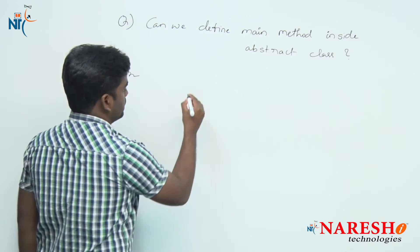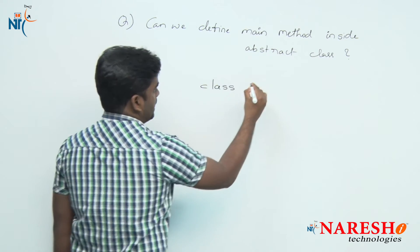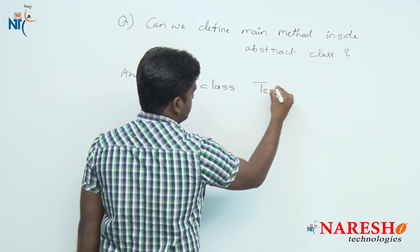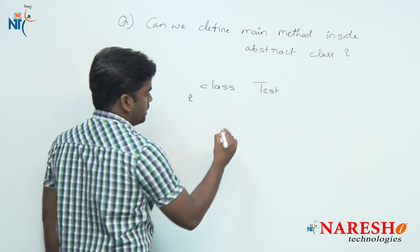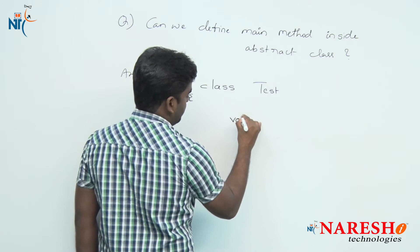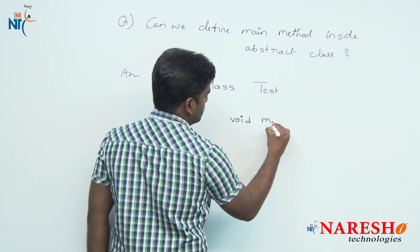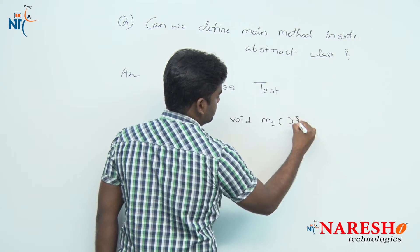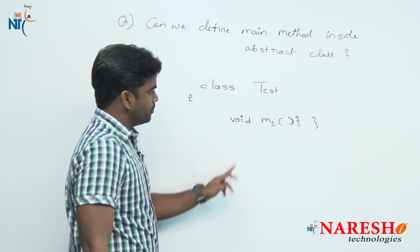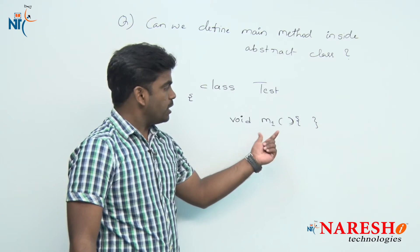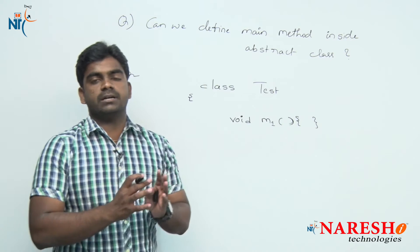Suppose there is a class named Test. Inside that class Test, there is one method, m1 method. m1 method is having definition, just empty definition I am writing. What type of method is it? It is a concrete method.